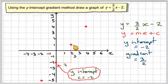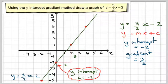And taking my ruler, I can draw all these 4 points up in a straight line. And I can label it y is equal to 3 over 2x minus 2.